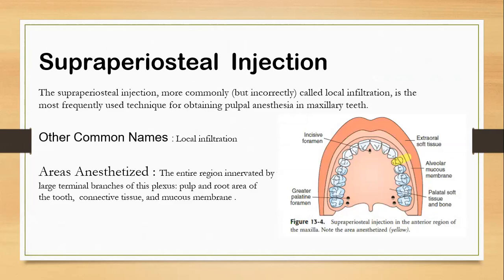The supraperiosteal injection, more correctly called local infiltration, is the most frequently used technique for obtaining pulpal anesthesia in the maxillary teeth. The areas anesthetized include the entire region innervated by the large terminal branches — the pulp and root area of the tooth, the connective tissue, and the mucous membrane. For example, if we are going to extract tooth 2-4, we need local infiltration in and around those teeth.